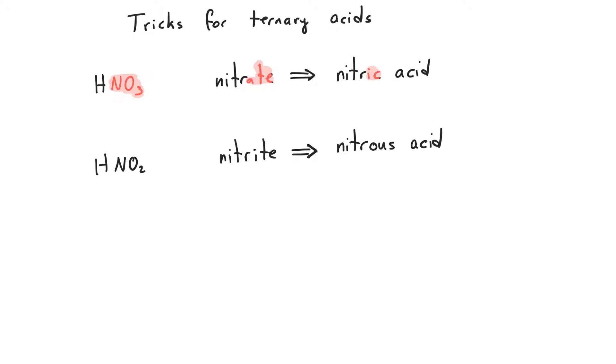If we have HNO2, it's the nitrite ion. The nitrite ion is going to become nitrous acid. So when we have a polyatomic ion that ends with ATE, we change it to IC and add the word acid. If our polyatomic ion ends in ITE, we change it to OUS and add the word acid.